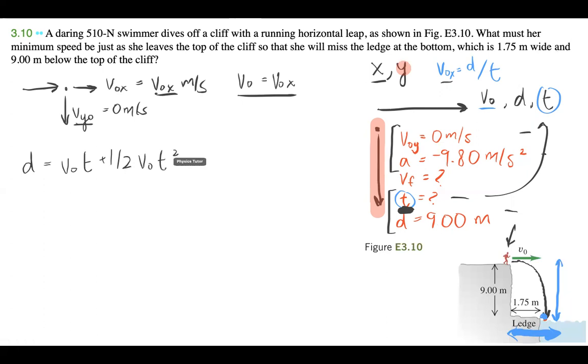So distance is equal to half of negative 9.8 times t squared, that's going to be nine.